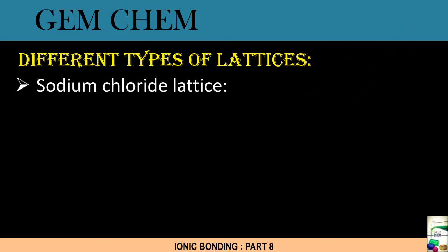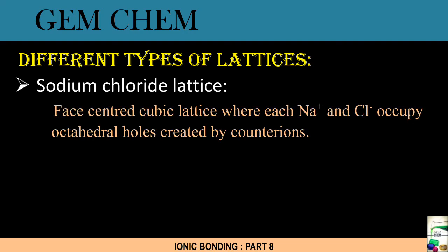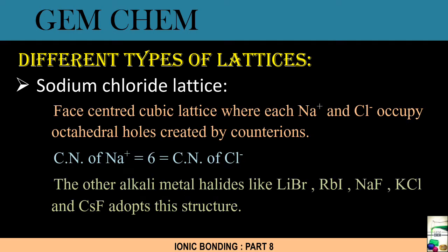First lattice of discussion is sodium chloride lattice. Here, sodium chloride crystallizes in face-centered cubic lattice where each of these ions, that is cations and anions, occupies octahedral holes created by the counter ions, and the coordination number in this case for Na+ and Cl- is 6 and 6. Other examples for these lattices are lithium bromide, rubidium iodide, sodium fluoride, and potassium chloride.